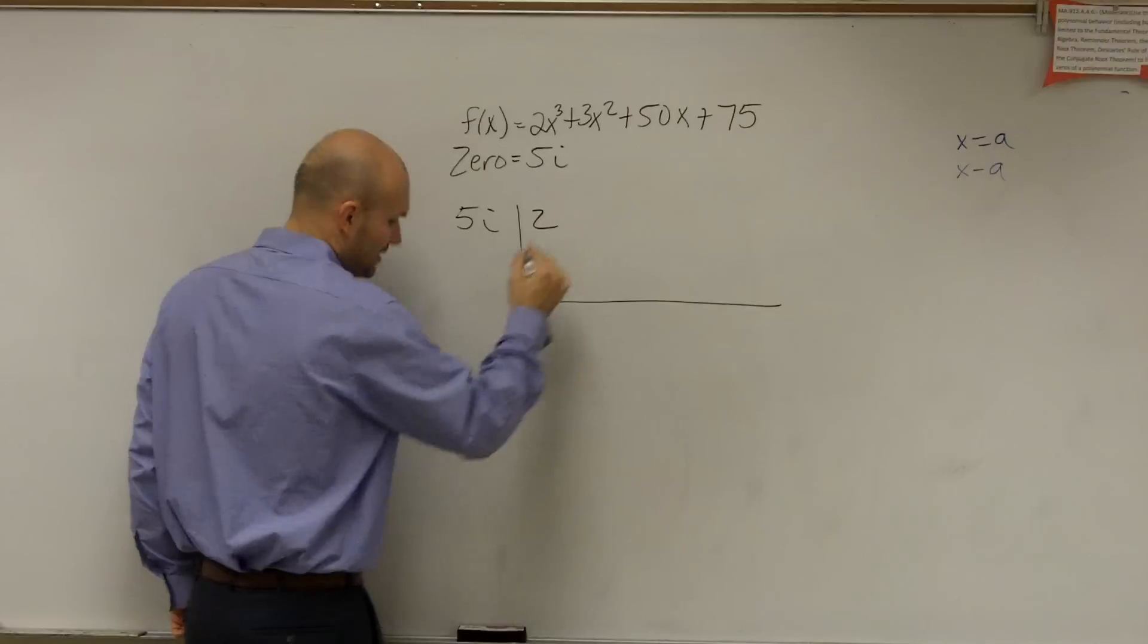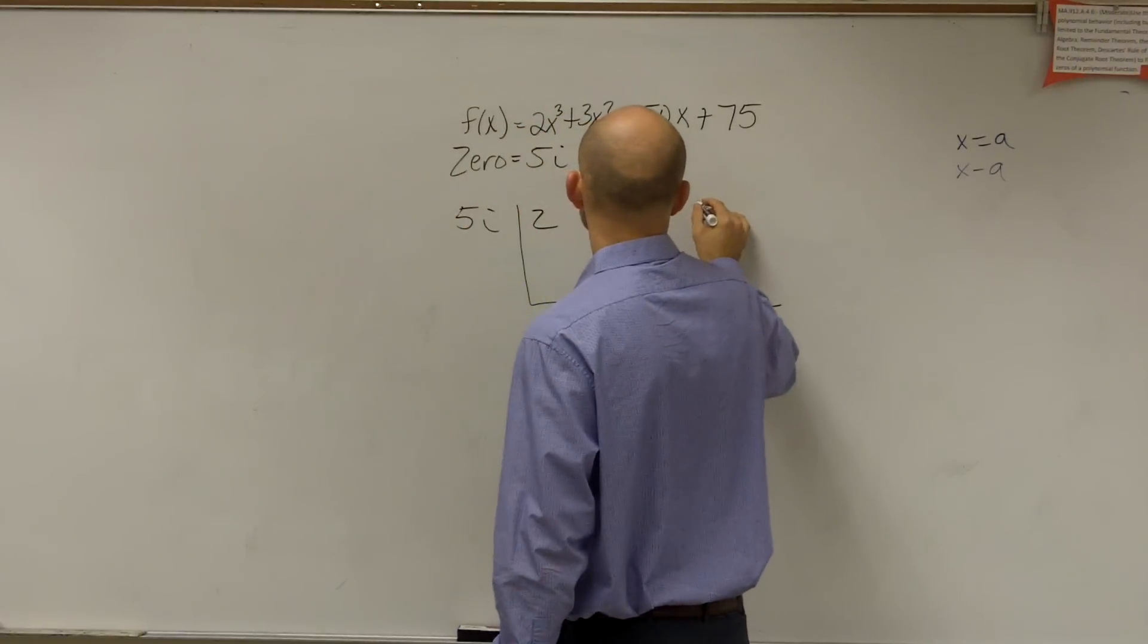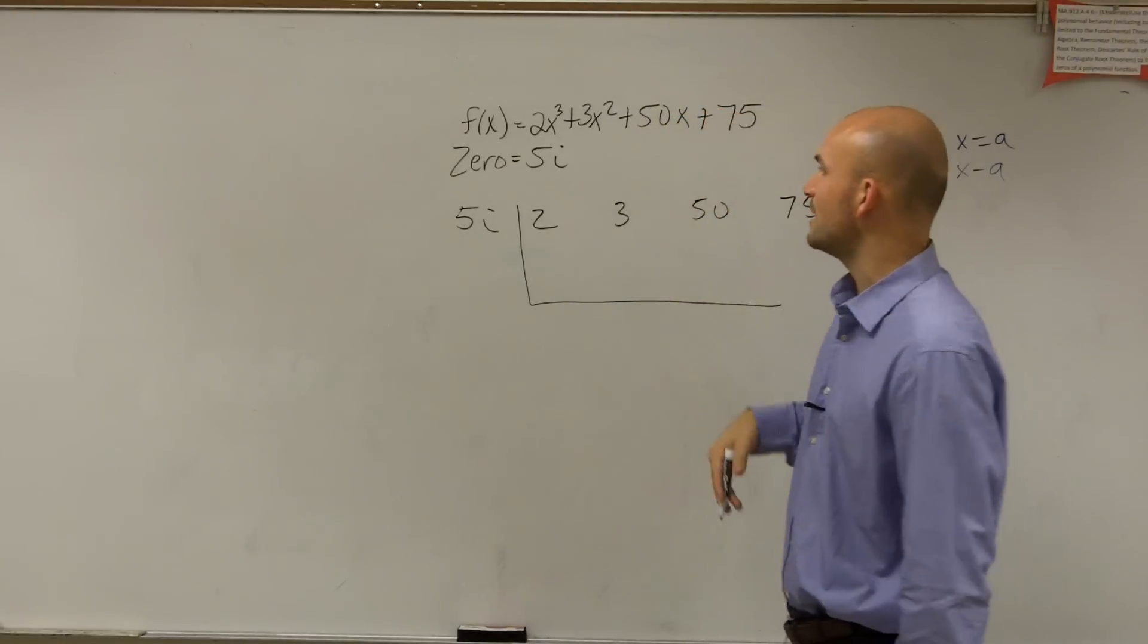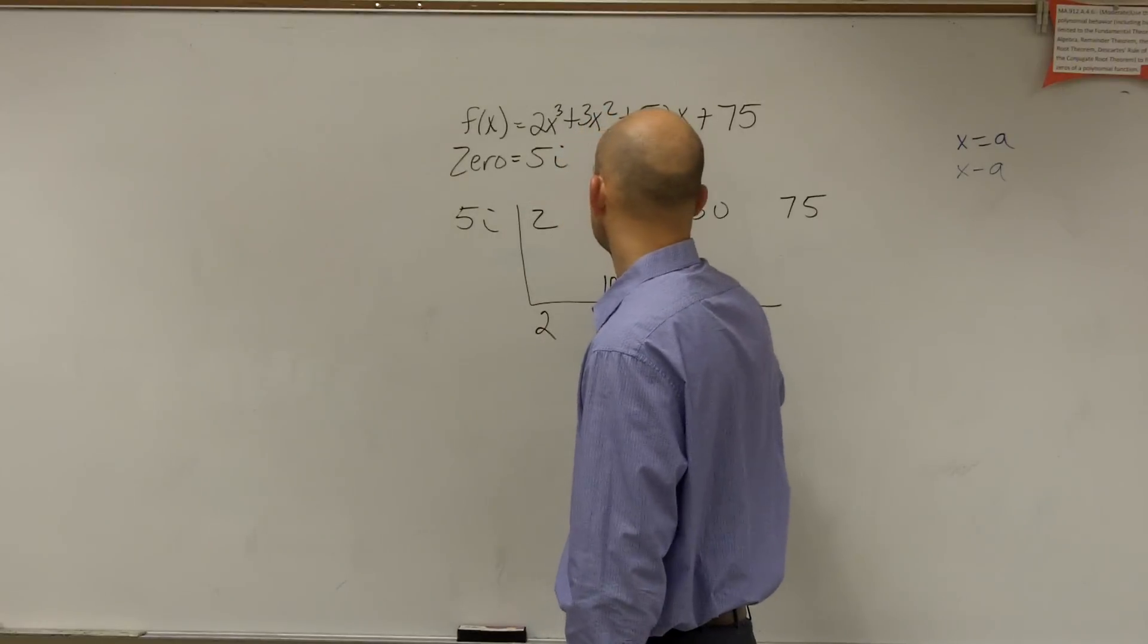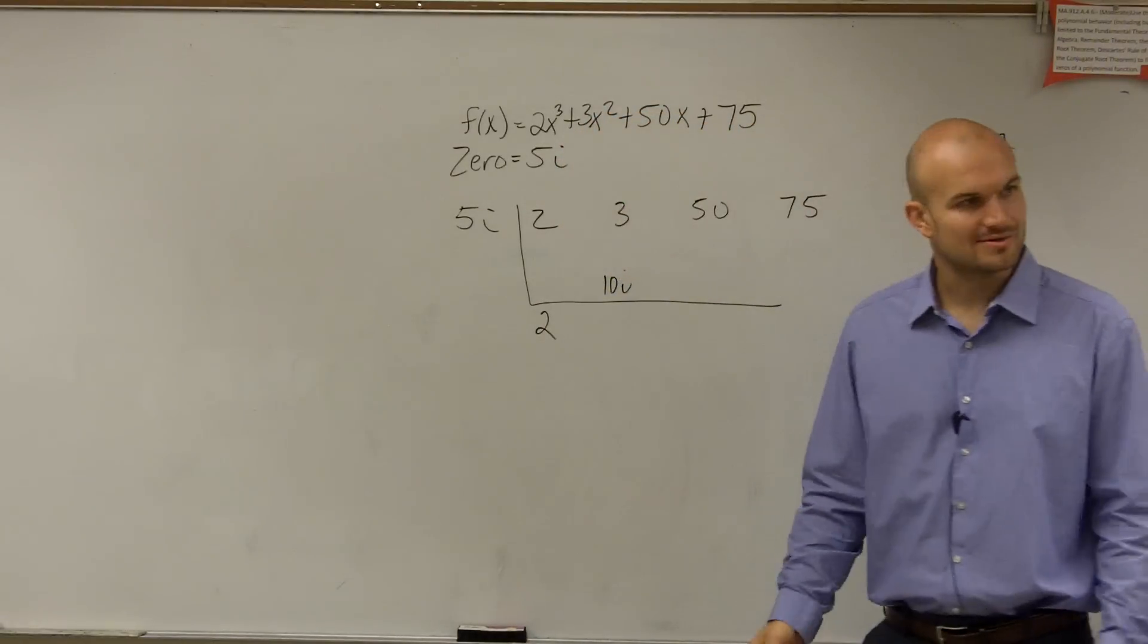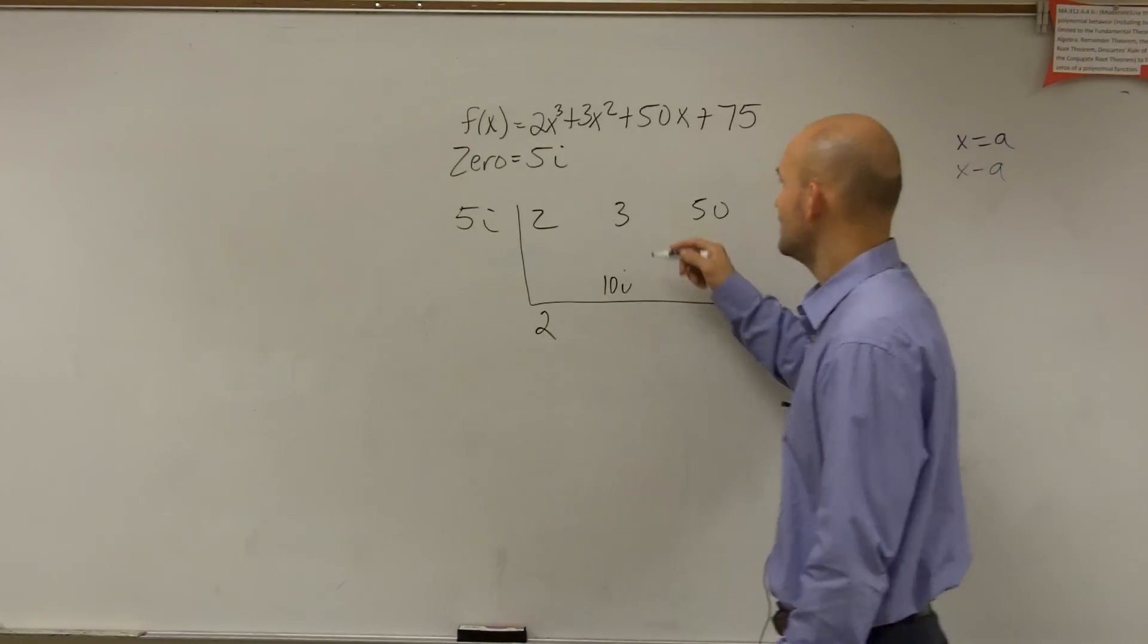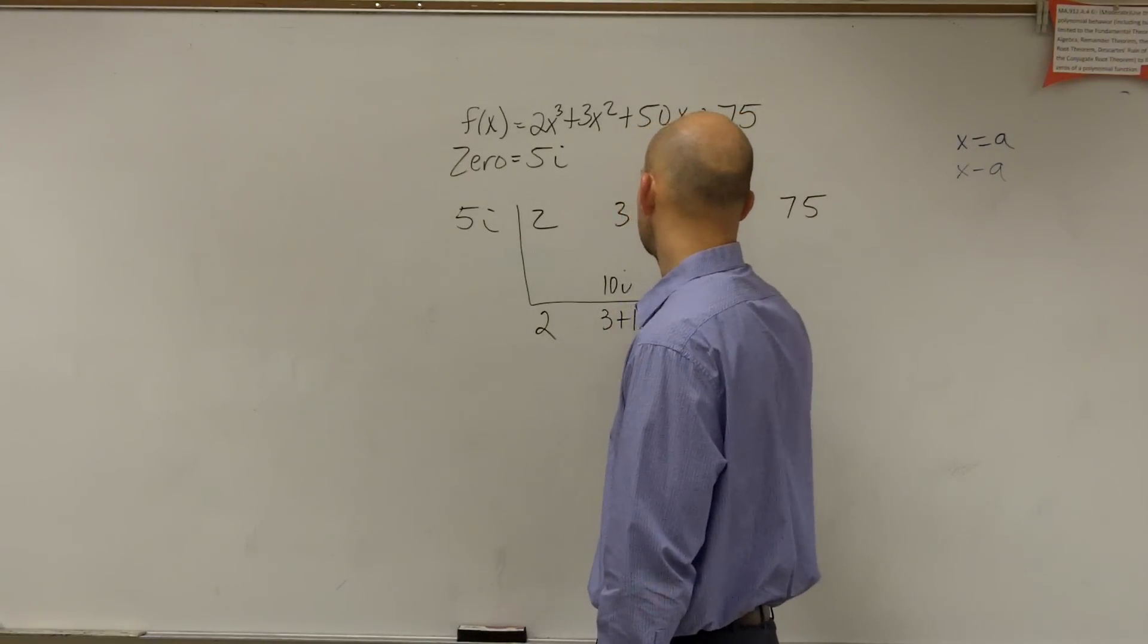So 5i, you might want to leave a little bit extra space between your coefficients when doing this, just because you're going to get some binomials. So I bring down the 2. 2 times 5i is 10i. That's why we practice the adding, subtracting, multiplying them. So then I have 3 plus 10i, which is going to be 3 plus 10i.